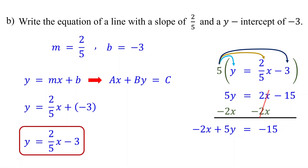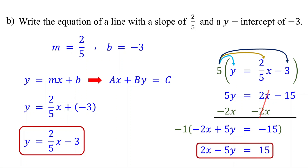In standard form, the coefficient of x must be positive, but here it is negative. To make it positive, multiply the entire equation by negative 1. Multiplying by negative 1 simply changes the sign of each term. This is the equation of the line in standard form.